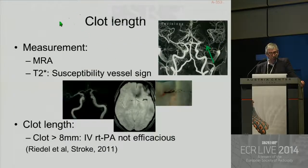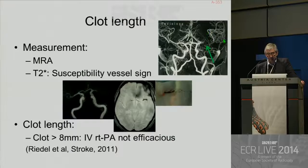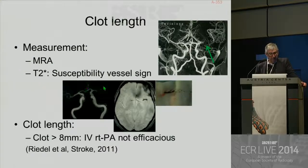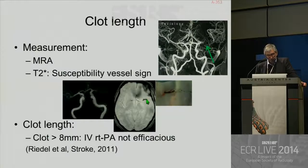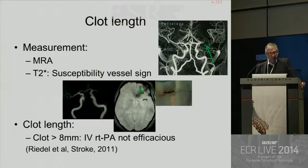Clot length is also an important piece of information. You can measure it on MRA, particularly contrast-enhanced MRA. You can also use T2-star, and it was shown by Olivier Nagara in a recent paper. You can use on T2-star this susceptibility vessel sign — the clot appears as a very hypointense area in the vessel with relative enlargement of the vessel. By measuring this susceptibility vessel sign, you can know the length of the clot.